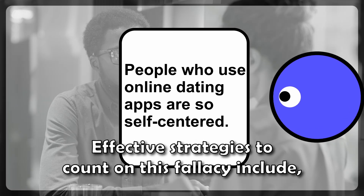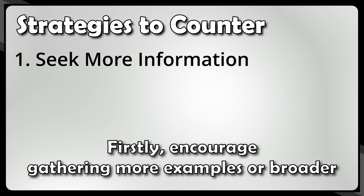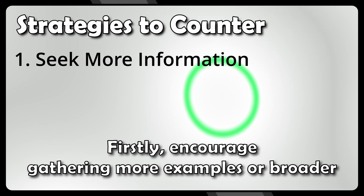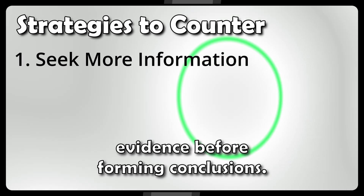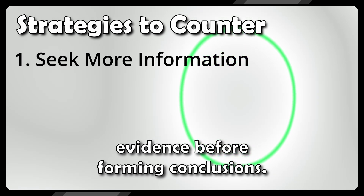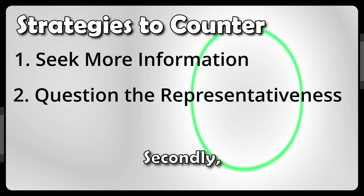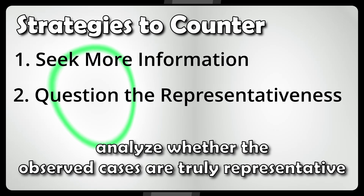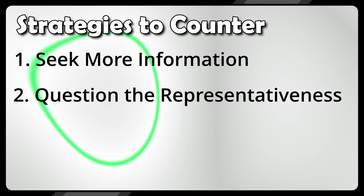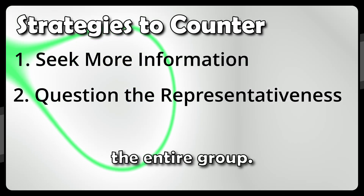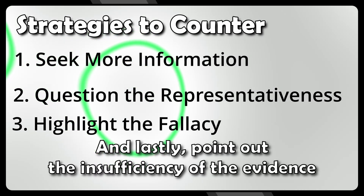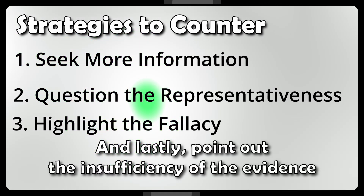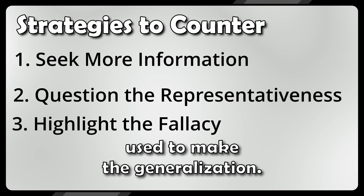Effective strategies to counter this fallacy include: firstly, encourage gathering more examples or broader evidence before forming conclusions; secondly, analyze whether the observed cases are truly representative of the entire group; and lastly, point out the insufficiency of the evidence used to make the generalization.